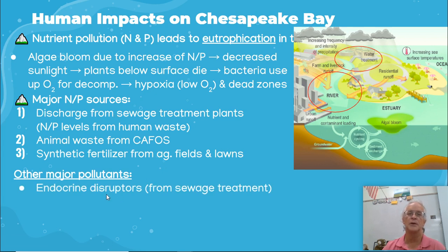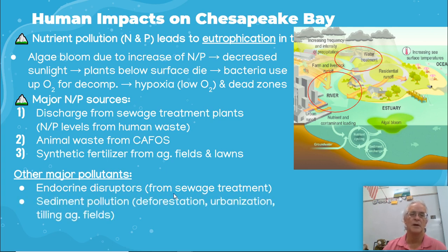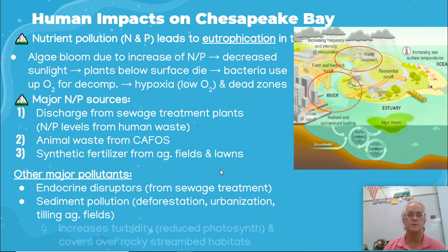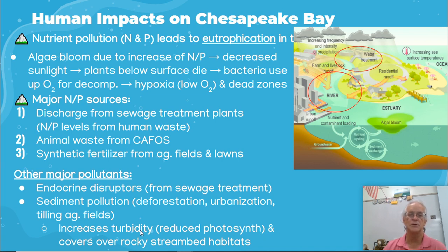Other major pollutants: you can have endocrine disruptors making it so that your insulin or your sex hormones don't work properly, because there are things coming out of sewage treatment plants interfering with that. Sediment pollution — in other words, too much dirt coming into the water because of deforestation, high-speed water runoff due to urbanization and impermeable surfaces, and agricultural tilling of fields. This increases turbidity — that's how much soil is in the water. If turbid, it's going to have reduced photosynthesis, and it's also going to cover rocky streambed habitats, making it harder for fish to live there.